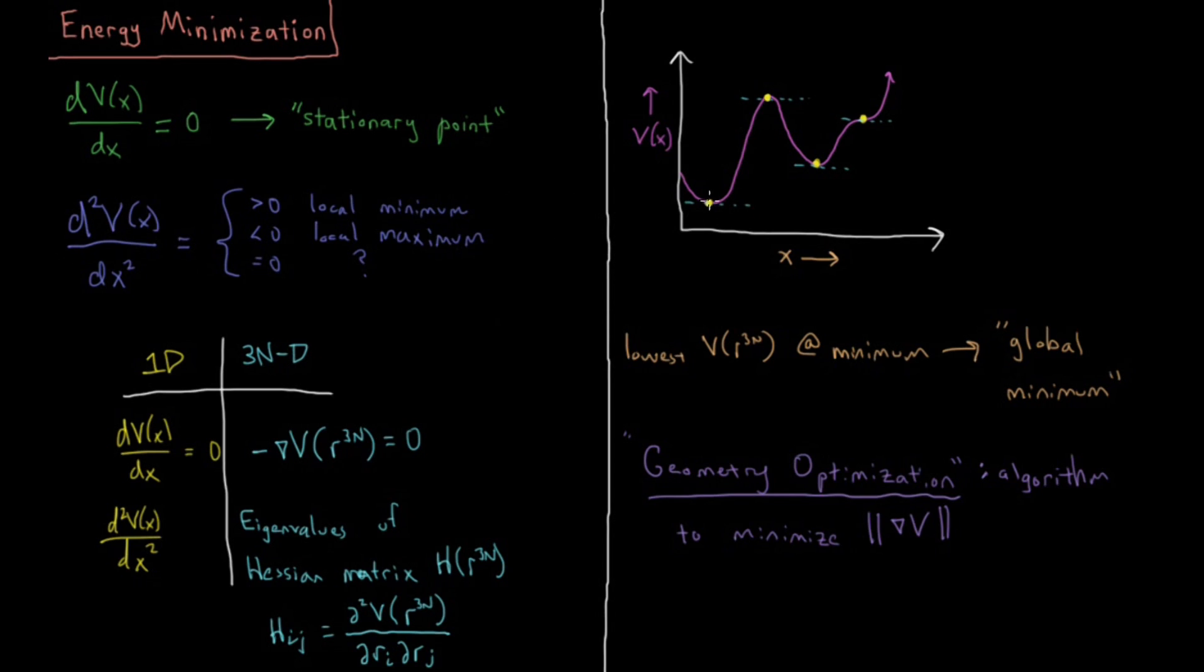All these stationary points are places where the derivative with respect to all coordinates is going to be zero. These can be local minima, local maxima, or in 3N dimensions, things called saddle points. We have our stationary points where the first derivative with respect to all coordinates is zero. This gives us local minima and local maxima, and hopefully, if we can find the lowest energy local minimum, we have a global minimum. The algorithm or procedure which minimizes the gradient of our function to find these stationary points is called geometry optimization.